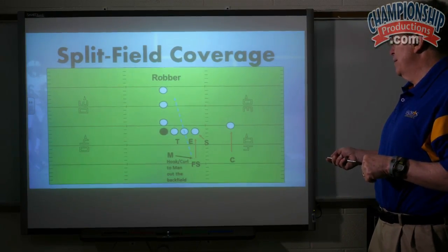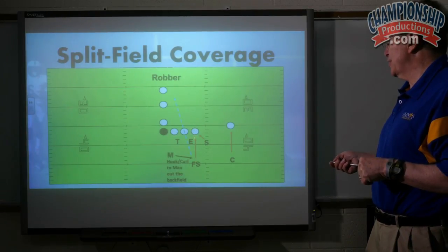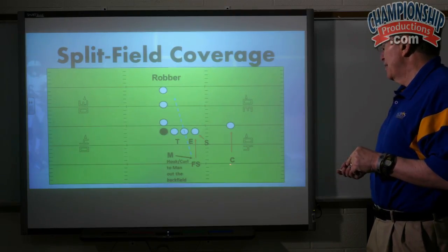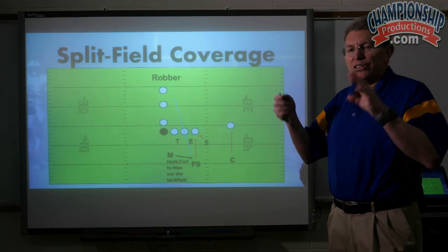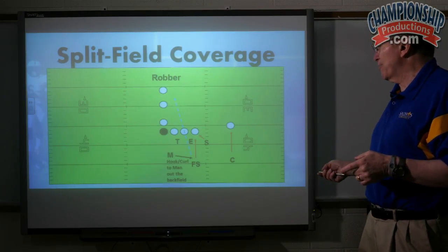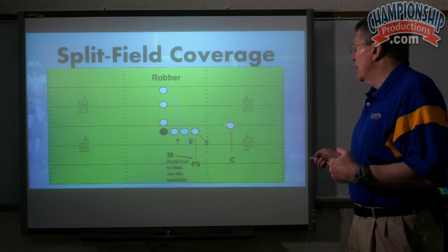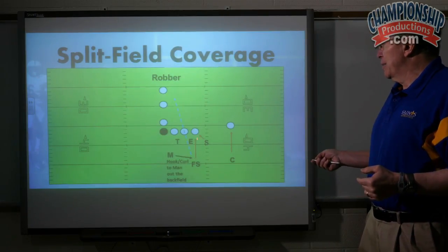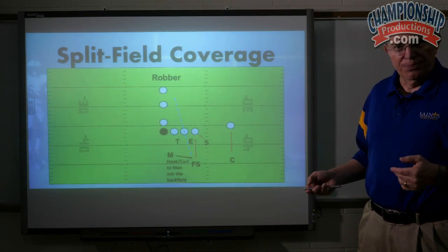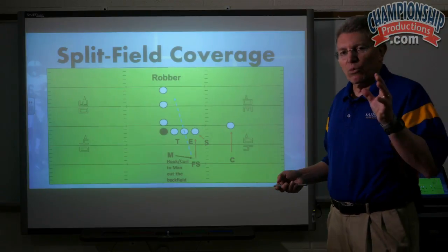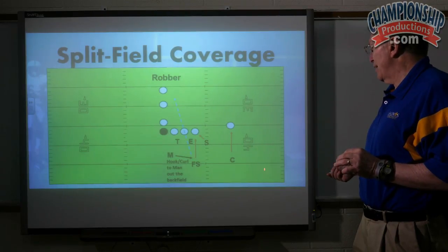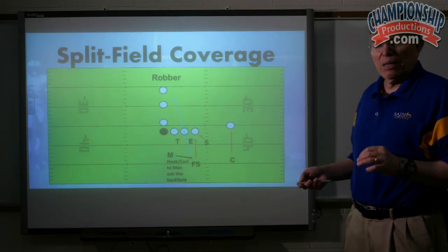Number one, number two — we're talking about now the free safety and the Saint are both going to read the number two receiver. The corner basically has man to man on the number one receiver. He just simply wants to stay over the top of him and he cannot get beat deep. So in essence, we cancel out number one — the corner's got it. The read comes in based on what number two does. It's very effective because the Saint is going to play the outside into the flat and the wheel, and the free safety plays over the top.